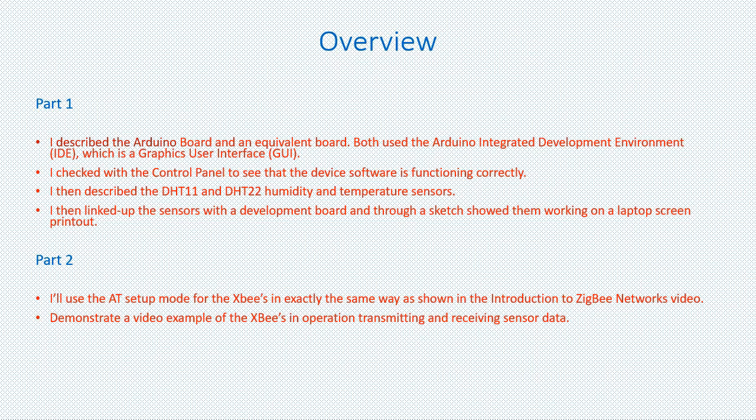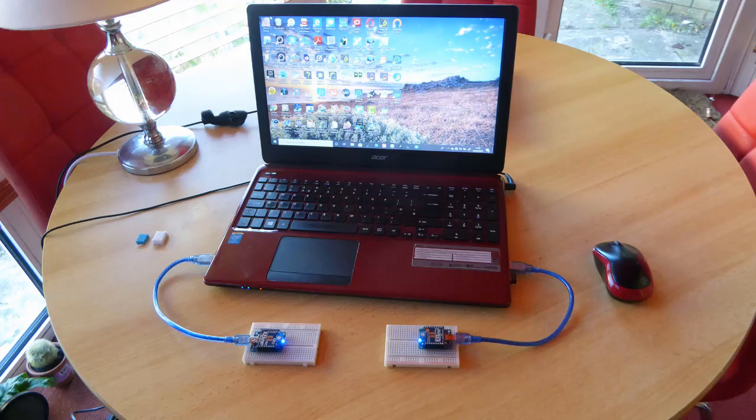In the introduction to Zigbee networks video I showed you how to configure the XBees — one as a coordinator and another as a router or end device. To save you reviewing that video I'll do a quick recap here. This time I'll cover the old XCTU GUI and the latest version. If your XBees are already configured from the earlier video you can skip this section.